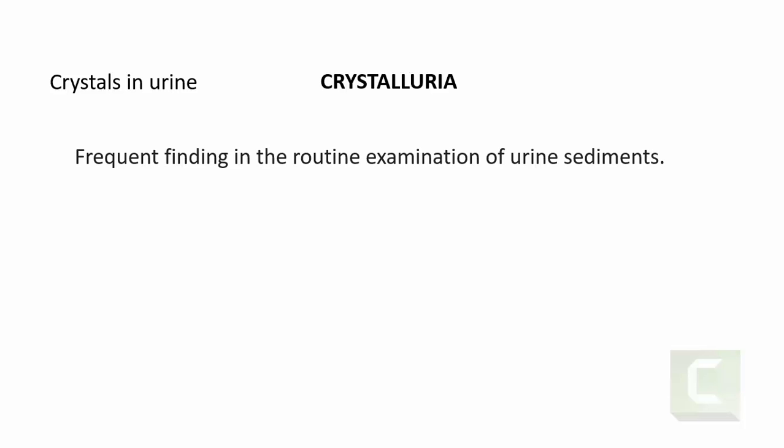The presence of crystals in urine is referred to as crystalluria. Crystalluria is a very frequent finding in the routine examination of urine sediments. Whenever a urine sample is received in the laboratory, it goes through a physical examination, chemical examination, and then the microscopic examination.